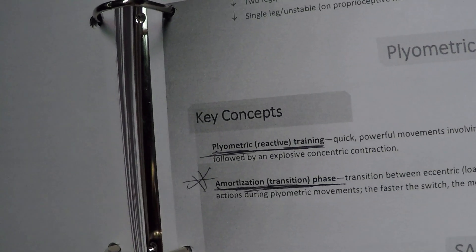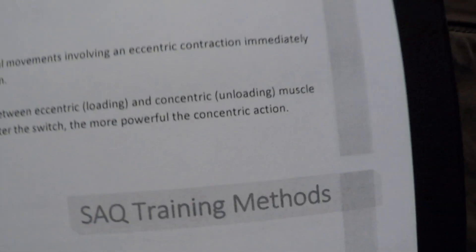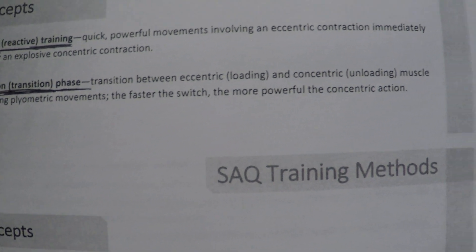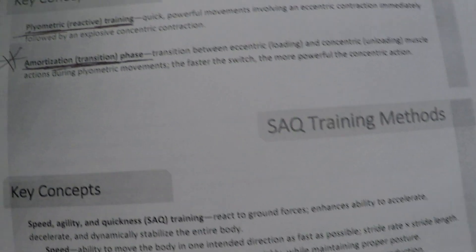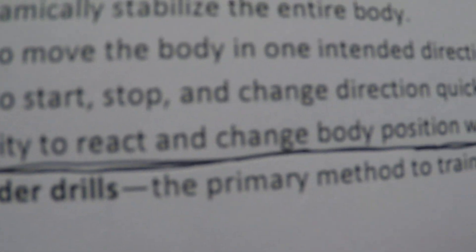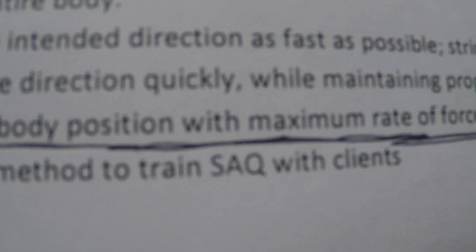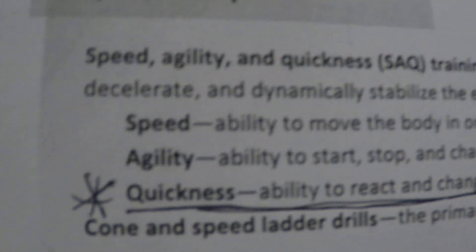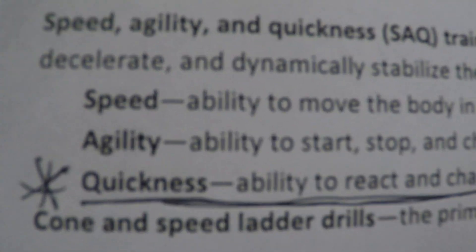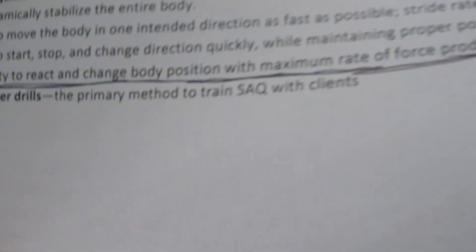Plyometric training - there are a couple of questions about that. Amortization is the transition between eccentric loading and concentric unloading. The faster the amortization phase, the more powerful the concentric action. There's a question about the ability to react and change body position with maximum rate of force production - I chose agility but it's quickness. Know that: quickness is the ability to react and change body position with maximum rate of force production.